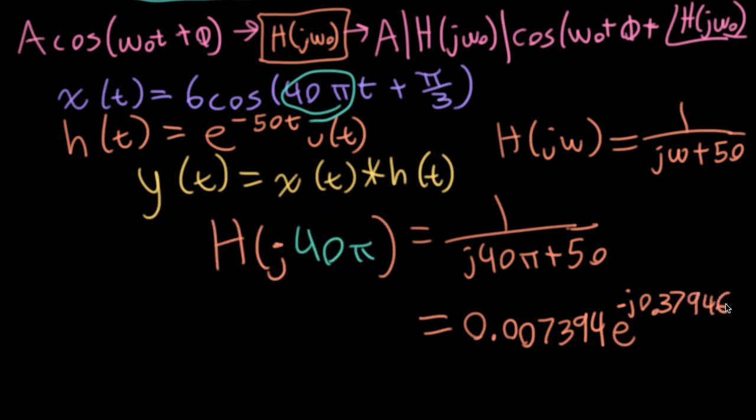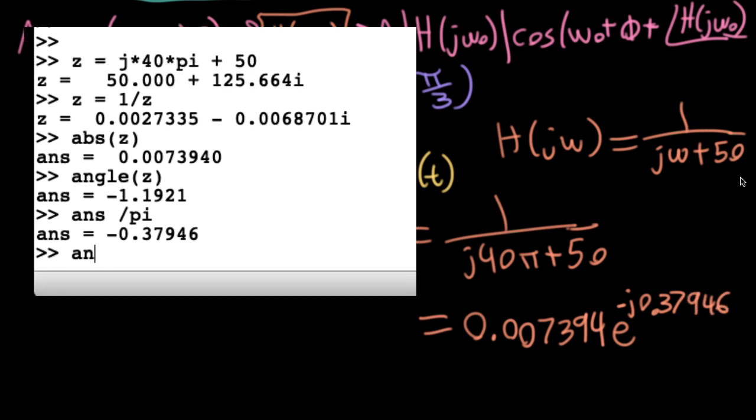And remember, we're going to add this to the phase that's going in, which was pi over three. Let me take this number here and add one third to it because everything here is in terms of times pi.